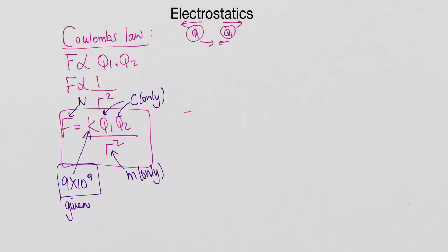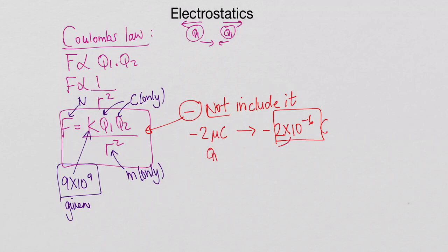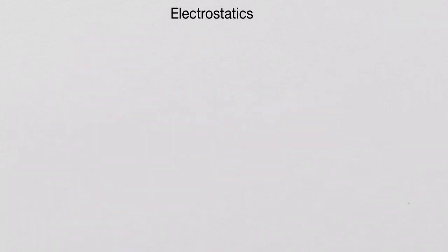And here's super important. If you've got a negative charge, we do not include it. So negative, we do not include it into this actual equation. So if you've got, let's say, negative 2 microcoulomb, firstly you're going to convert that. So it becomes a negative 2 multiplied by 10 to the negative 6 coulomb. The value you're going to substitute in, let's say that was Q1, you would substitute that 2 multiplied by 10 to the negative 6 in there. So you don't include your negative.